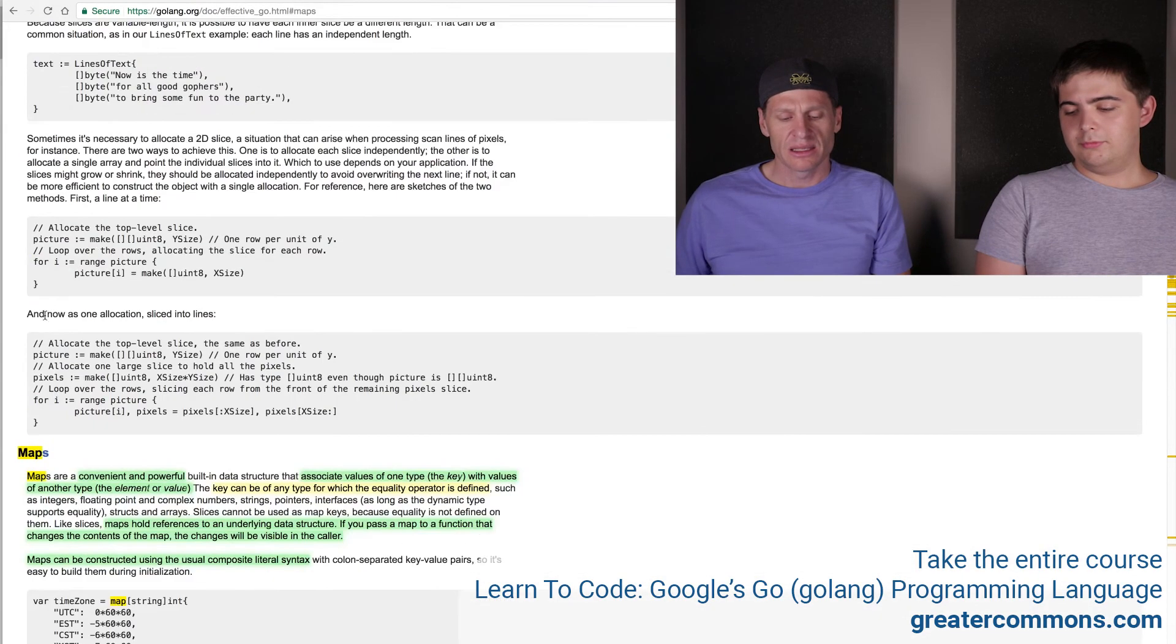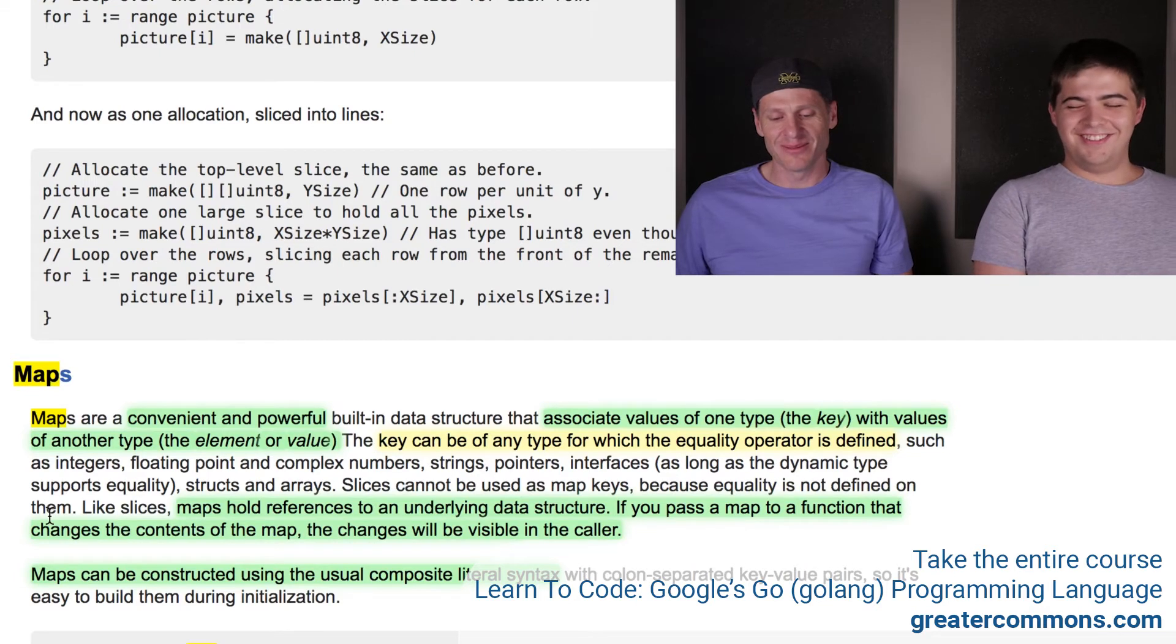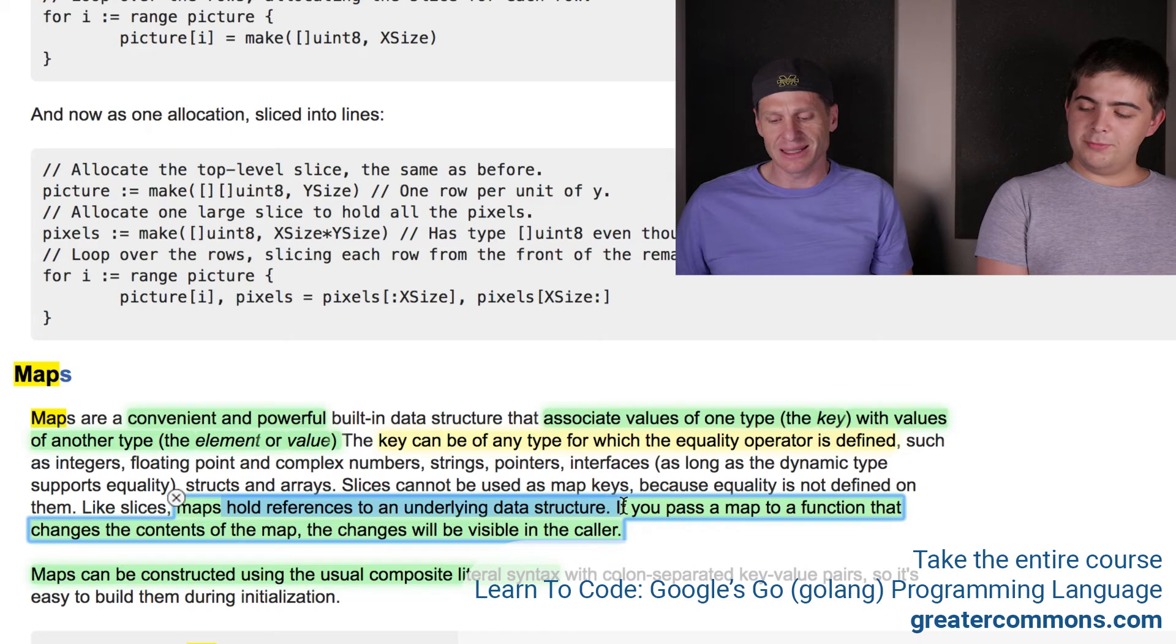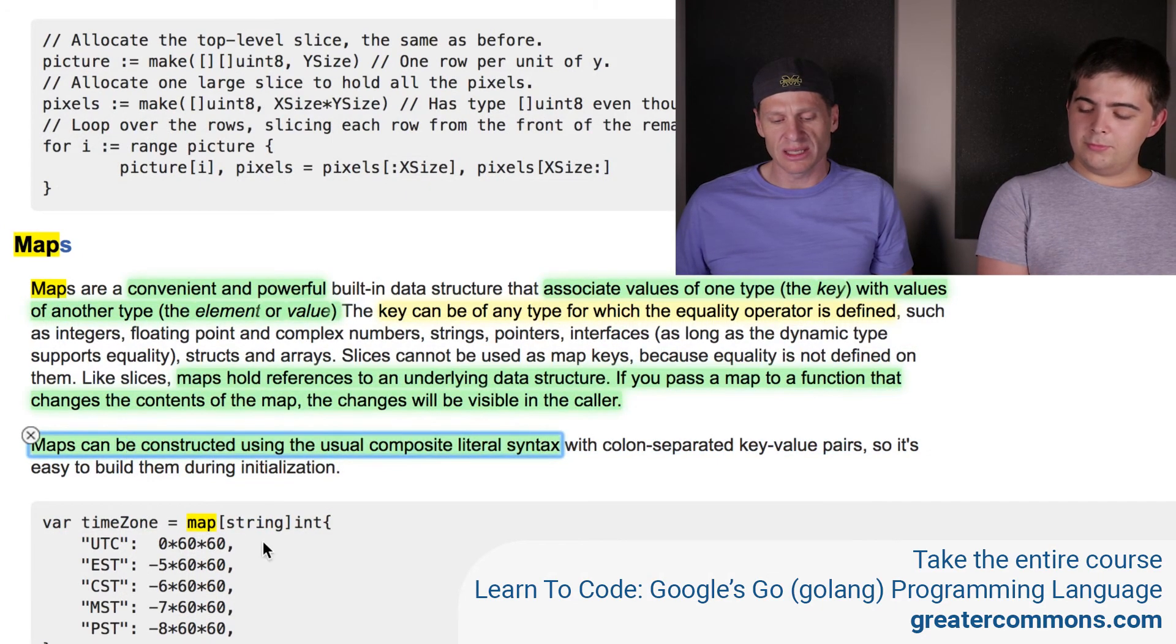I have highlighted some of the points here and let's just read through them a little bit. If you have anything you want to say about these, you can just chime in. Not really. I'm doing a good job. Give me like a low A, a medium A. A? Yeah. Good. Doing good work. Strong A. Awesome. So maps are convenient, powerful, built-in data structure that associate values of one type, the key, with values of another type, the element or value. The key can be any type for which the quality operator is defined. Maps hold references to an underlying data structure just like slices. So if you pass a map to a function that changes the contents of the map, the changes will be visible to the caller.